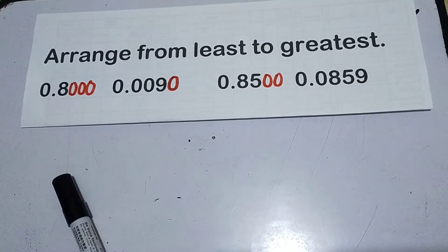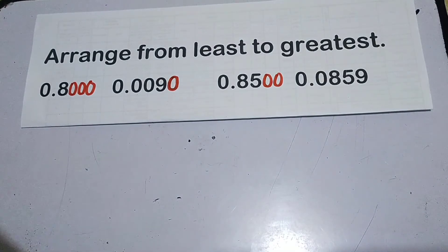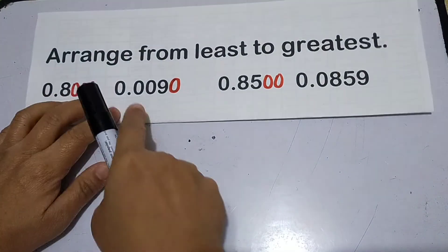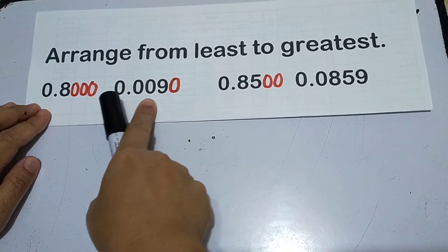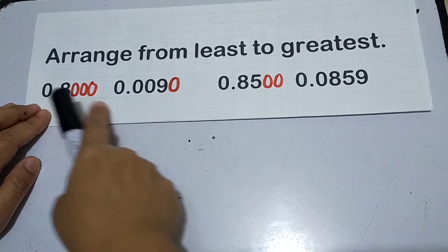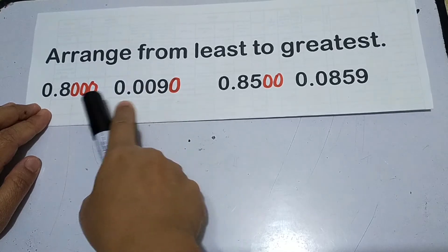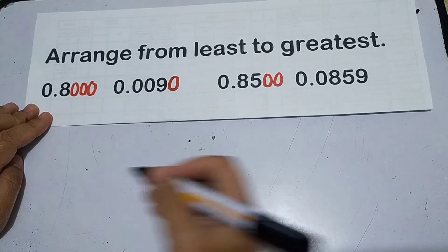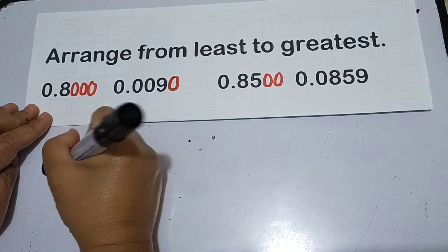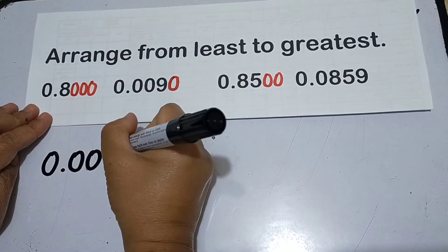Now, ano yung pinakamababang value? Madali na siyang ma-distinguish. That means, ito yung pinakamababa. 90 ten thousandths. Nilagyan natin ng imaginary zero. Kaya lang, siyempre, sa scratch lang natin, imaginary zero lang yan. Kaya ang isusulat mo pa rin ay 9 thousandths.